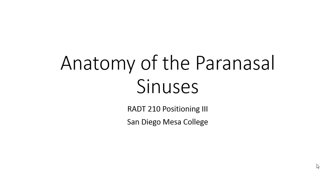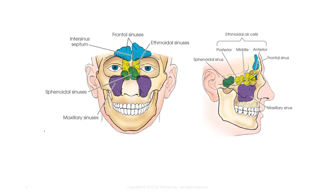In this presentation, we'll be reviewing the anatomical structure of the paranasal sinuses. The sinuses can be defined as air-filled cavities located in the frontal, ethmoid, and sphenoid bones of the cranium, as well as the maxillae of the face. They are named sinuses because of their formation from the nasal mucosa and their continued communication with the nasal fossa.